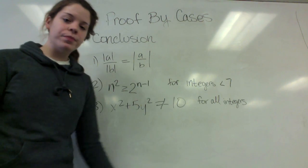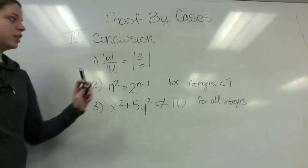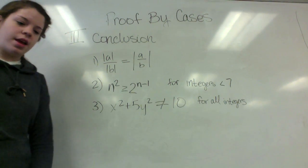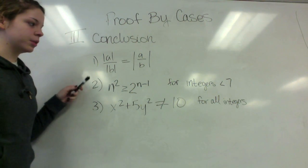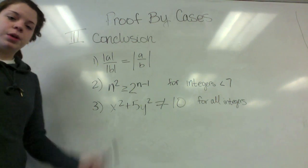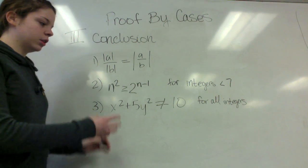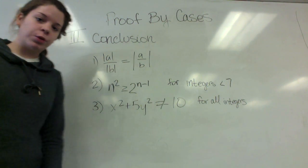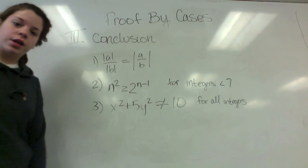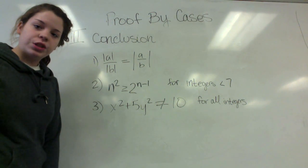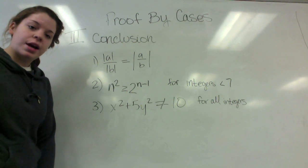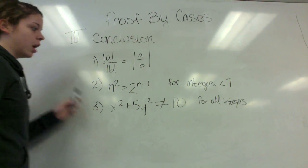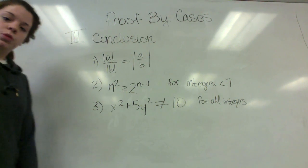To sum up our proof-by-cases mini-lecture: we covered three examples, and for each case, p implied q for separate cases p. The proof-by-cases method is great for when you have a finite number of cases to prove, or when you cannot prove something with only one case.